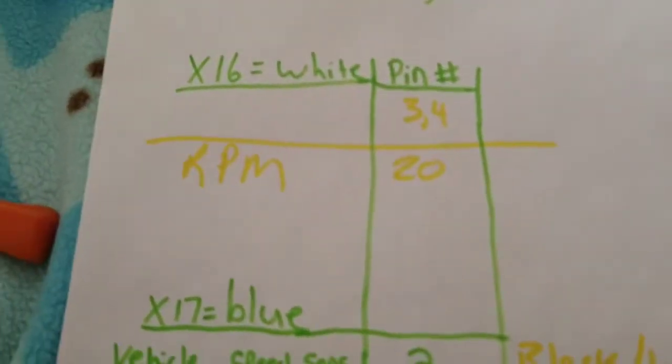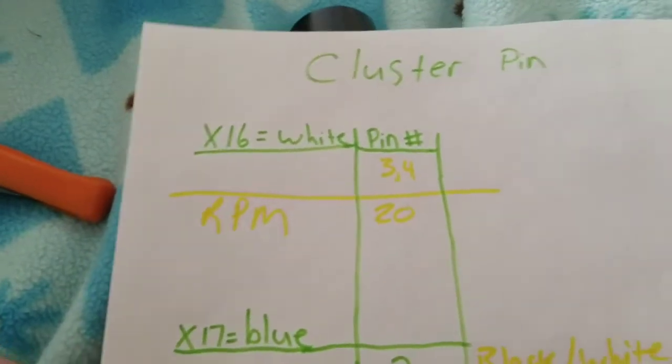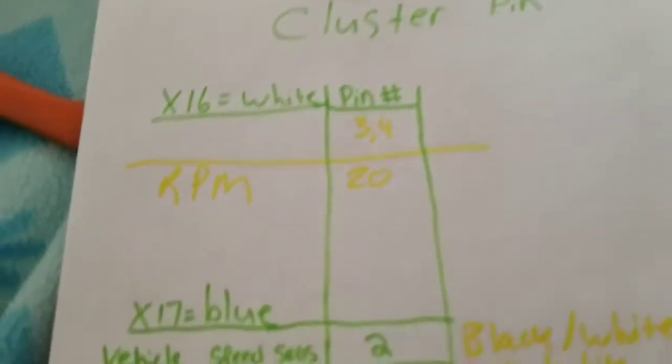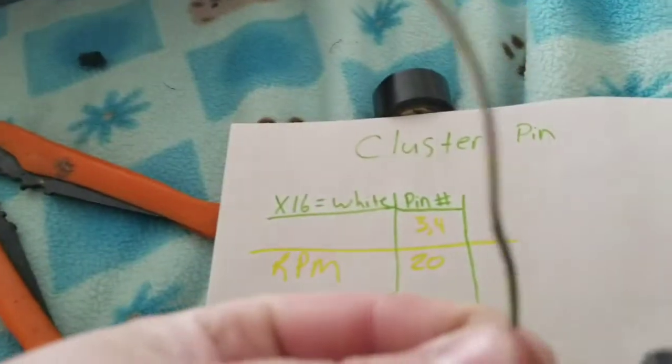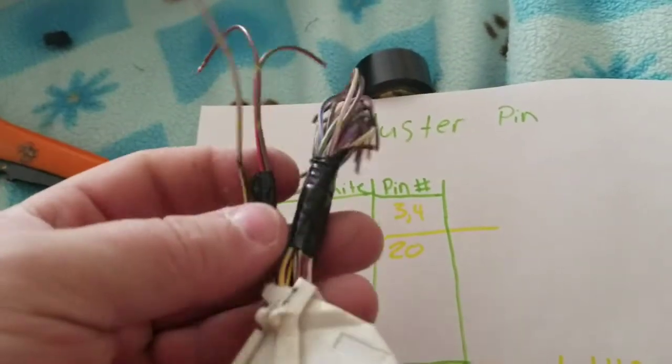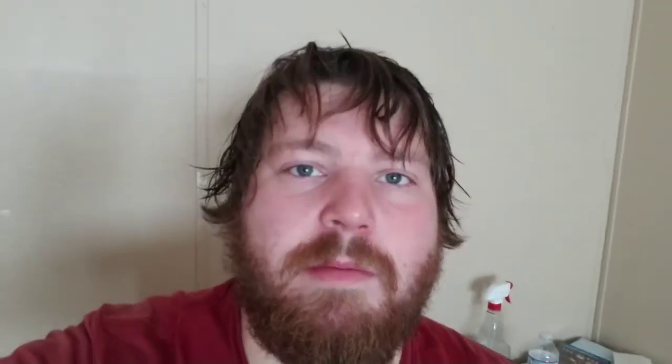I almost forgot and I'm glad I remembered and I'm glad I didn't cut any wires off of the white X16 clip. So RPM gauge, tach, it was pin number twenty, which is just white and like lime green colored wire. So we actually needed three off the white, so glad I didn't cut it.